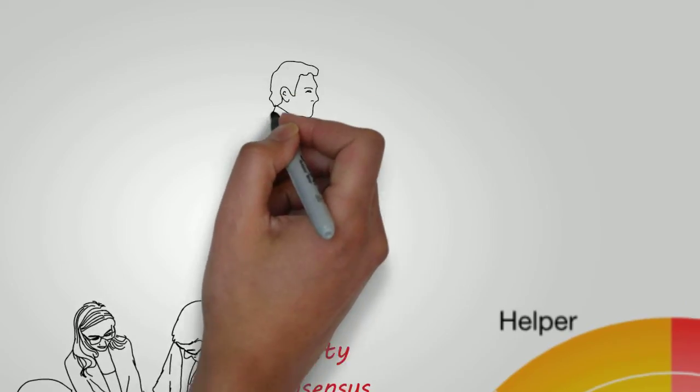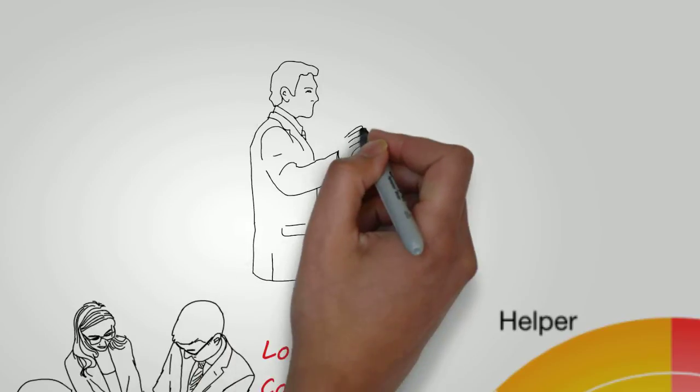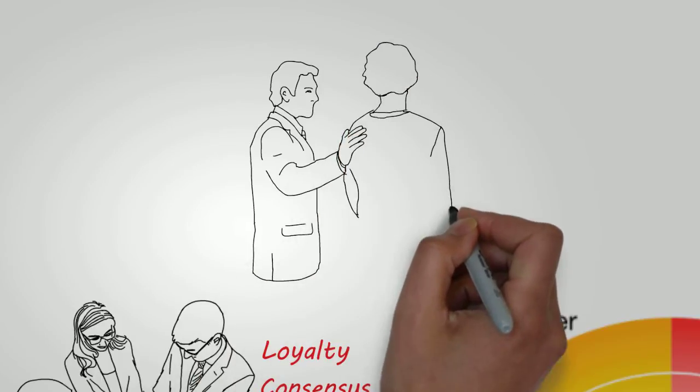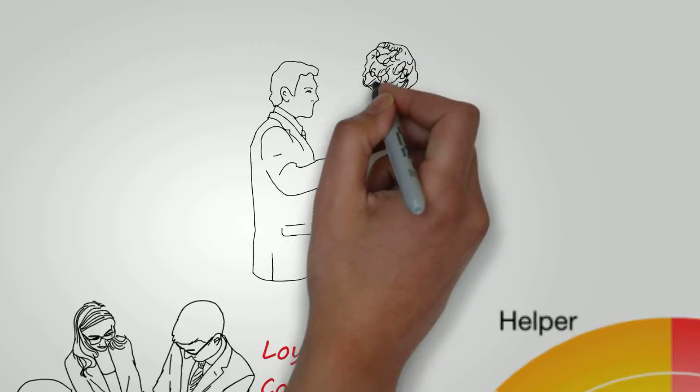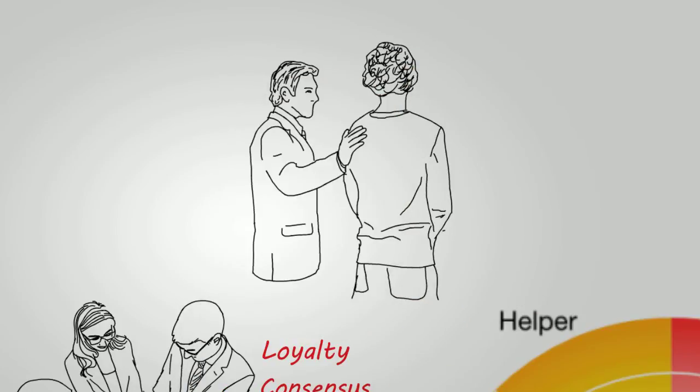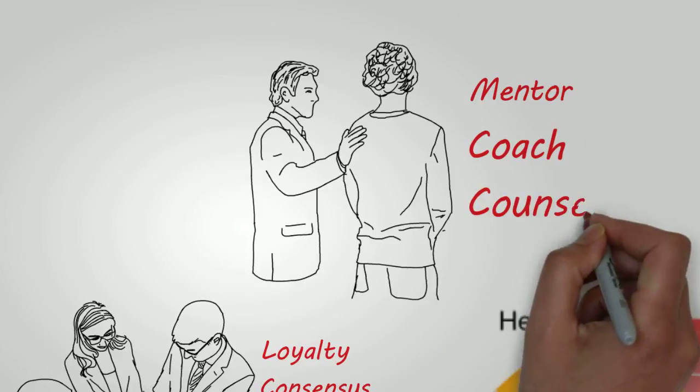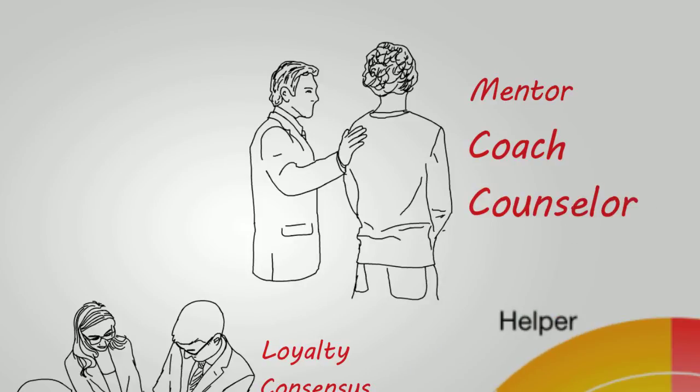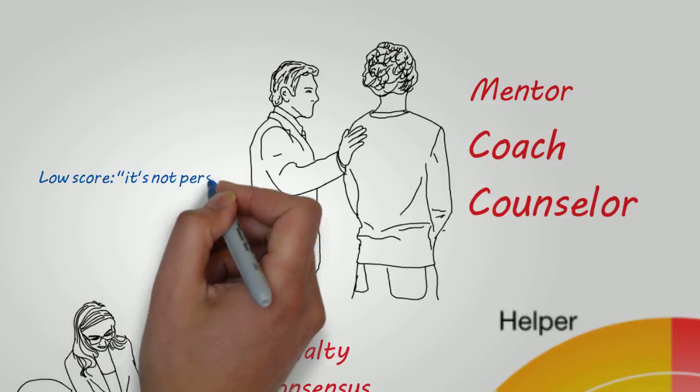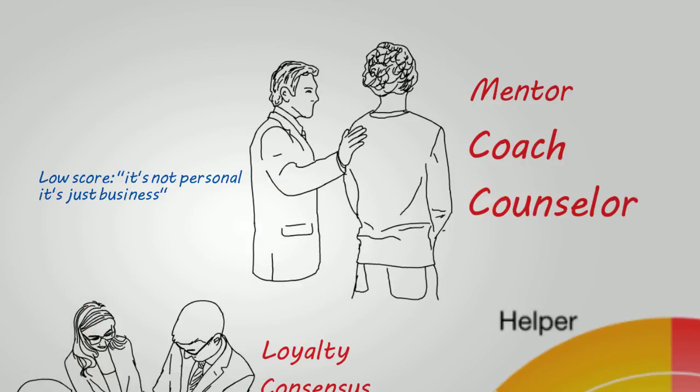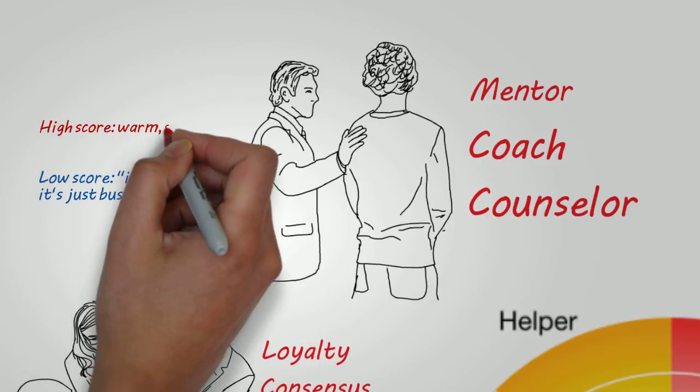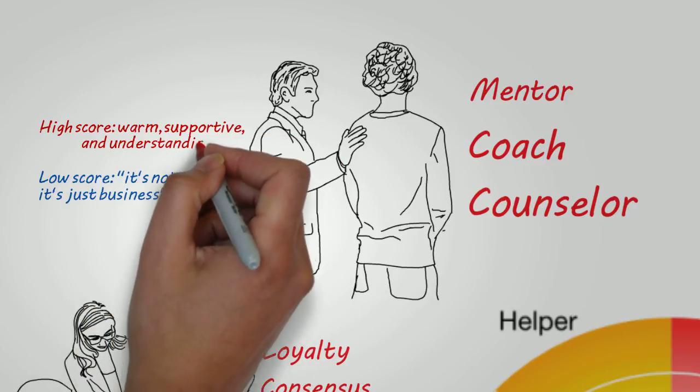Where the team player trait is looking at interactions in a group, the helper trait is measuring how well a candidate interacts on a one-on-one basis. Because they have a lot of empathy and caring, you need someone with this trait to act as a coach or mentor or counselor. And they take the time to get to know you as an individual. A weak helper will be able to make business decisions that negatively impact on other people. A strong helper is good at listening, advising, understanding how other people feel. A candidate with a very high helper score will have difficulty in making decisions that hurt others. They have difficulty getting the word no out of their mouths.